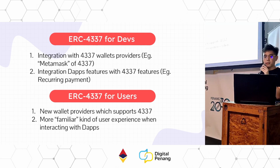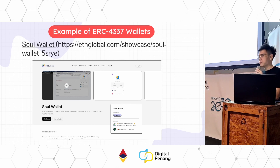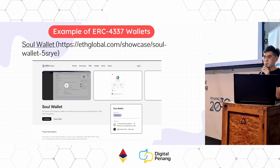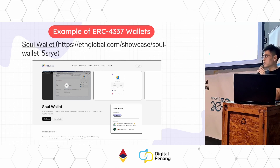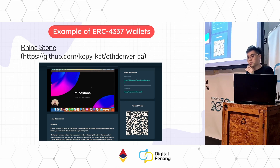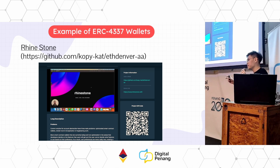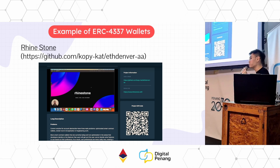Here are some existing examples from the last few months, mostly from Ethereum hackathons. The first is Soul Wallet, which just raised 3 million in funding — it started at a hackathon focusing on account recovery. There's also Rhinestone, which modularizes the wallet using a diamond proxy pattern, allowing you to upgrade or downgrade your wallet with specific features like transaction limits.